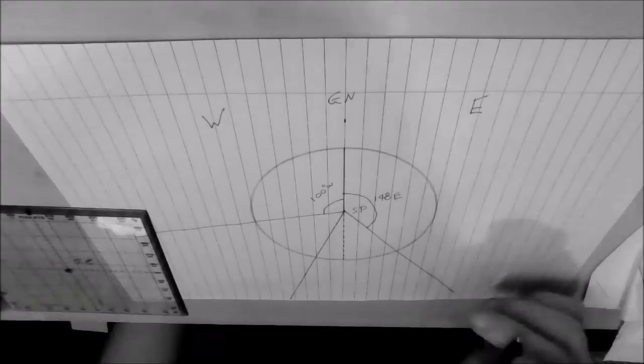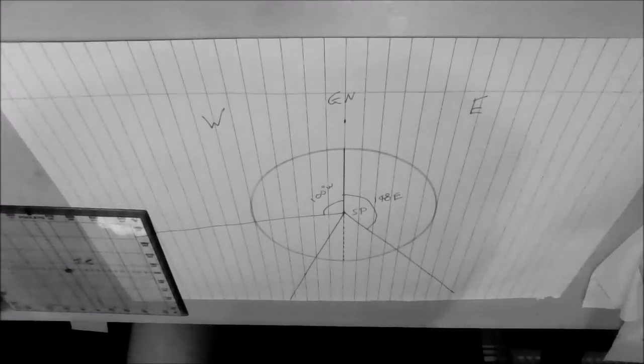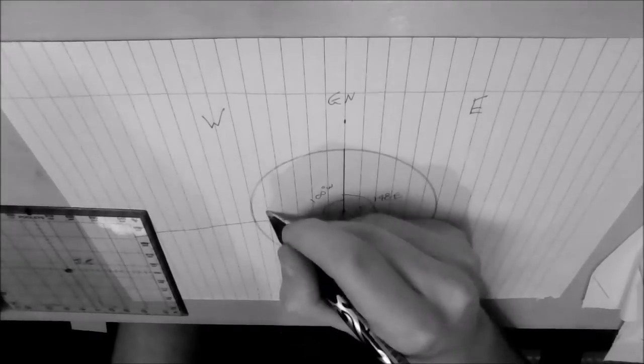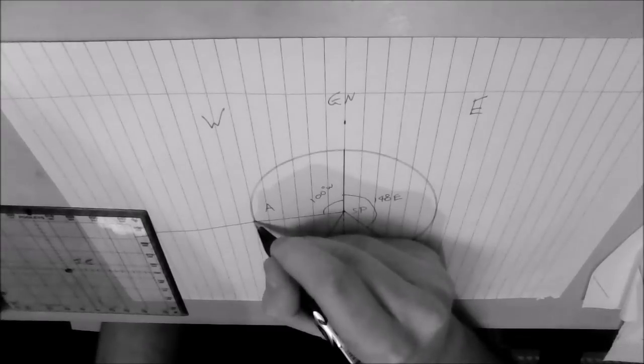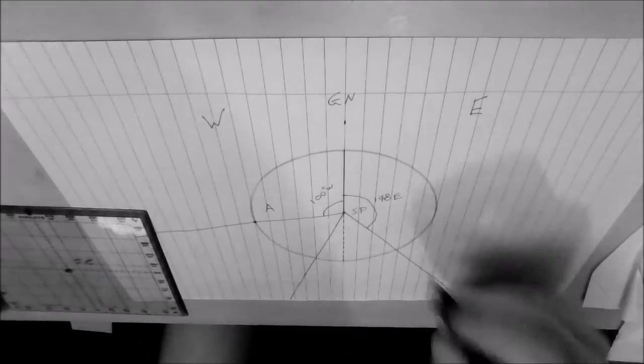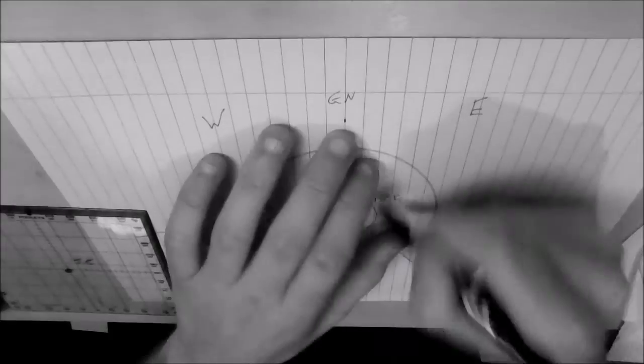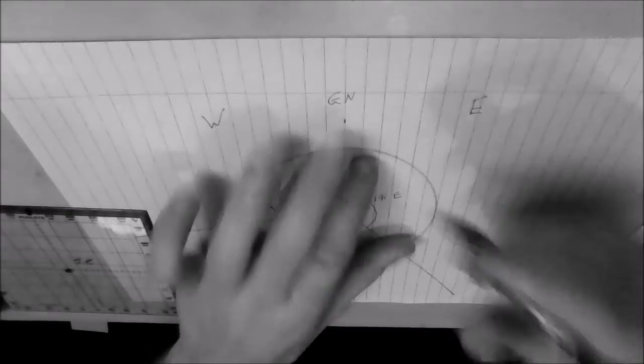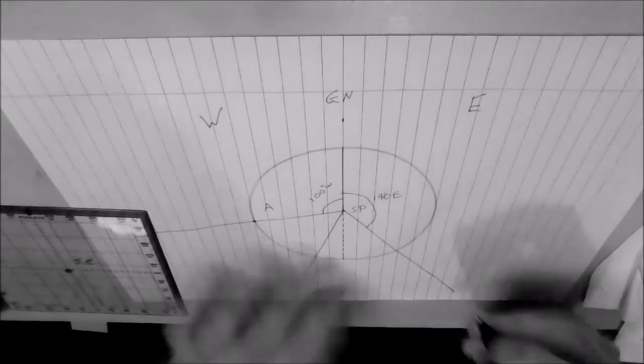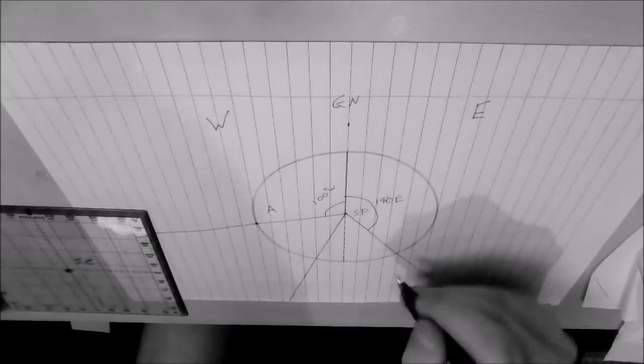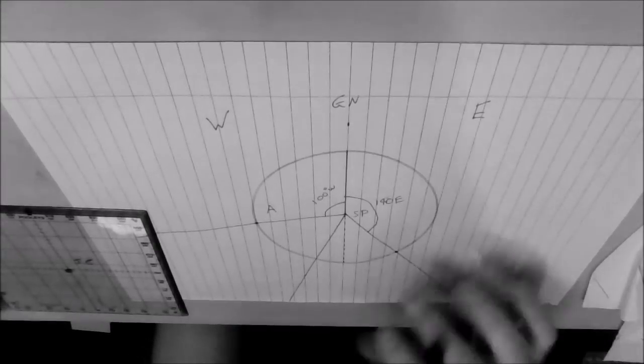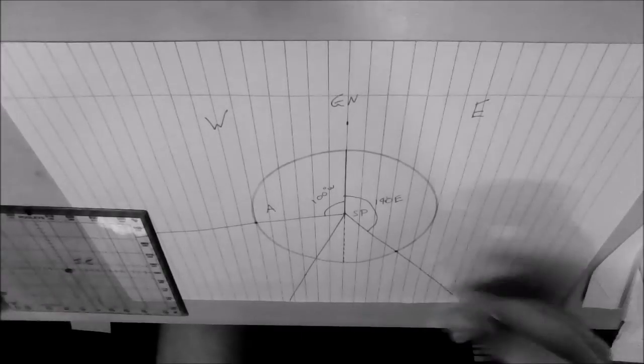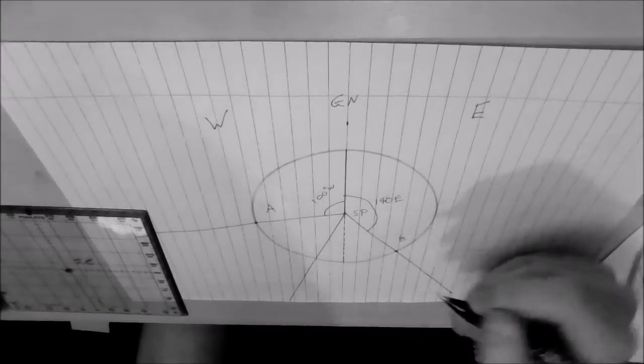OK, so this one here on the left, which is 100 degrees west, we will mark as A, as it says in the question. And we'll put a dot at the point at which that line intercepts the circle. And this point over here, again, we'll put another dot here at the point the line intercepts the circle, and we'll call that B.